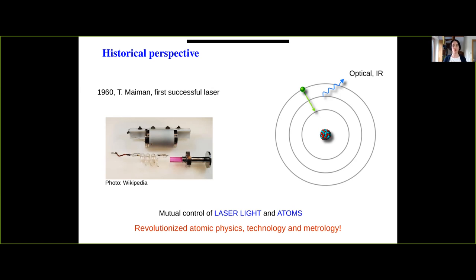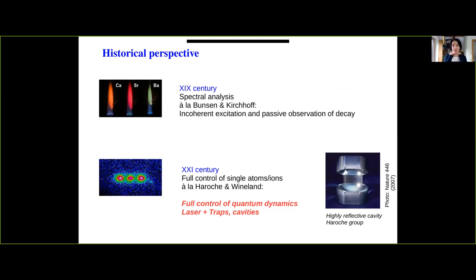You might ask: atoms and lasers just mutually control each other — what's so interesting in exciting atoms? In principle, this has been done a long, long time ago, already back in the 19th century. Bunsen and Kirchhoff in Heidelberg were doing incoherent excitation by simply burning substances. But in comparison to what we do today, at that time it was about incoherent excitation and passive observation of decay. Whereas today we can, with lasers, obtain full control of single atoms, single ions, single quantum systems, with implications towards quantum information, quantum computing, and many fields relying on lasers, traps, and cavities. The key word here is control — we have far more control now, and this was given to us by the laser.